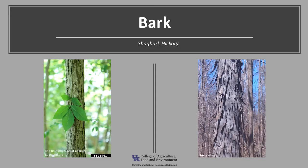The mature bark of Shagbark Hickory is its most unique feature and is where this tree derives its common name. On young trees the bark is smooth and gray, but as the tree grows the bark breaks into long wide plates that curve away from the trunk. This gives the tree a shaggy appearance, hence its common name Shagbark Hickory.